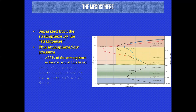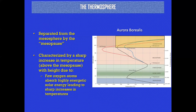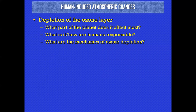Then you have the mesosphere and the thermosphere, where you find phenomena like the aurora borealis, observed in very northern or southern latitudes near the poles. Human-induced changes include climate change, depletion of the ozone layer, and air pollution. The ozone layer is something humans caused damage to, but we've begun to fix it, which is a good thing.